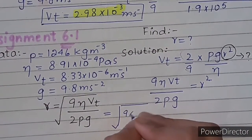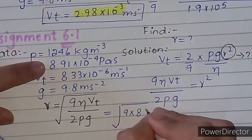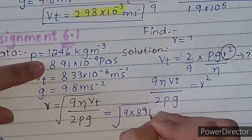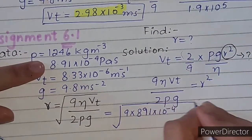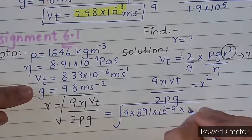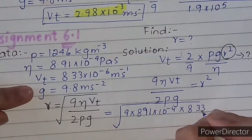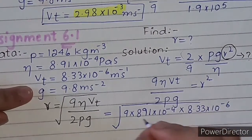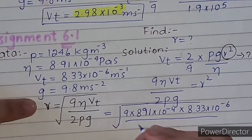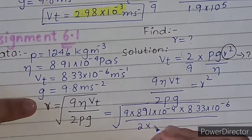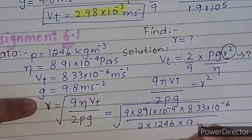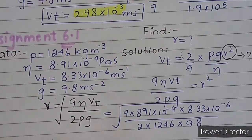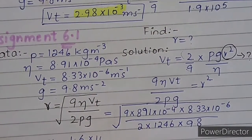Substituting: numerator is 9 × 8.91×10⁻⁴ × 8.33×10⁻⁶, denominator is 2 × 1246 × 9.8. Calculating this gives r = 1.6×10⁻⁶ meter.